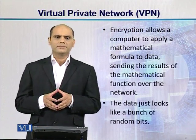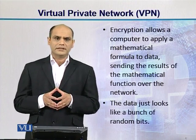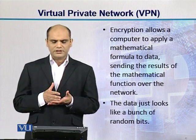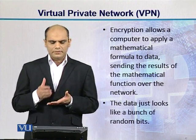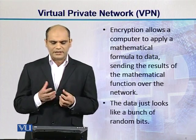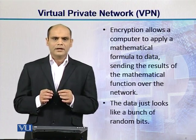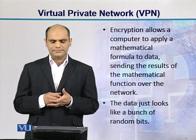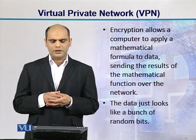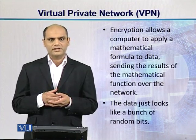Encryption allows a computer to apply a mathematical formula to the data. The output of that mathematical function — the look of that data — becomes randomly located bits. So the data is hidden. Encryption allows a computer to apply a mathematical formula to the data, sending the results of the mathematical formula function over the network.